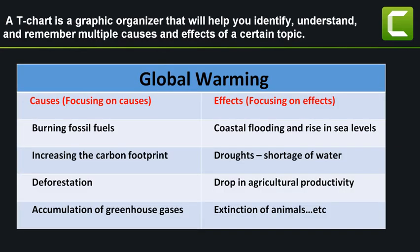Now let's organize our ideas in a t-chart. A t-chart is a graphic organizer that will help you identify, understand, and remember multiple causes and effects of a certain topic. Our topic is global warming. The t-chart is divided into two sections: one for causes — burning fossil fuels, increasing the carbon footprint, deforestation, and accumulation of greenhouse gases — and one for effects — coastal flooding and rising sea level, droughts or shortage of water, drop in agricultural productivity, and extinction of animals.